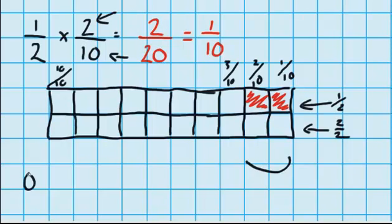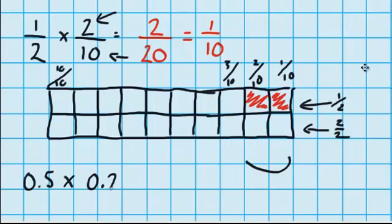Well, 1 half we know is 0.5, and 2 tenths is the same as 0.2. Now before we work out the answer to this one here, let's look at a couple of things. Up here we worked out that the answer to 1 half times 2 tenths was 1 tenth. And we know that 1 tenth is the same as 0.1. So when we work it out as a decimal, our answer should be 0.1.